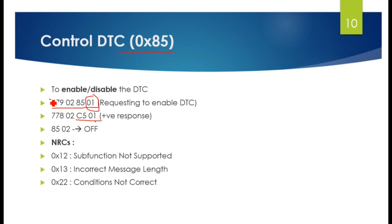You can remove the error, and after removing and doing diagnostics you can enable it again using the same service ID and sub-function 85 01. Control DTC has these NRCs: 0x12 (sub-function not supported), 0x13 (incorrect message length), 0x22 (conditions not correct). These NRCs I have explained in my previous video - you can watch the UDS protocol playlist.